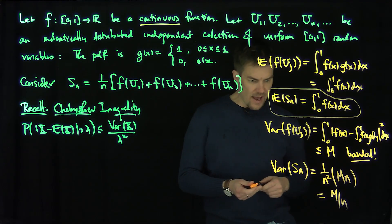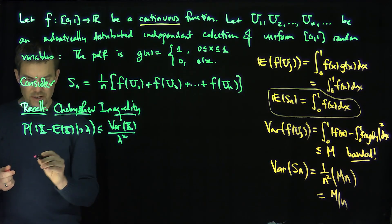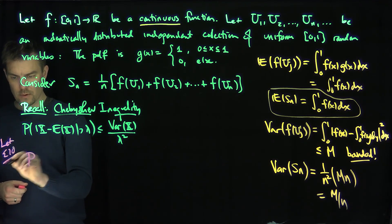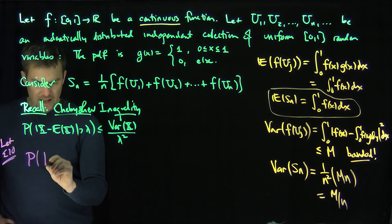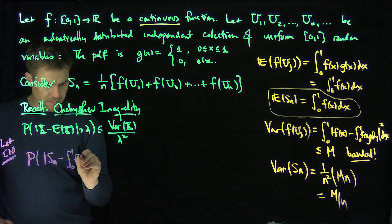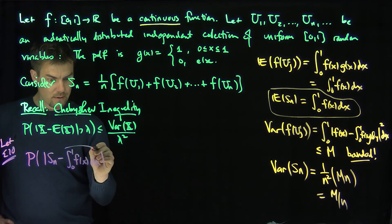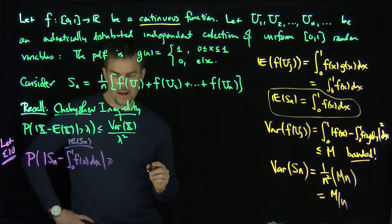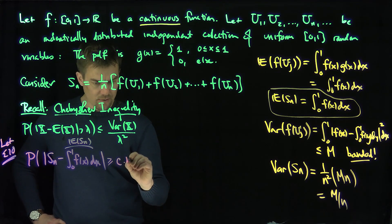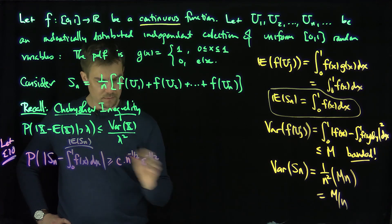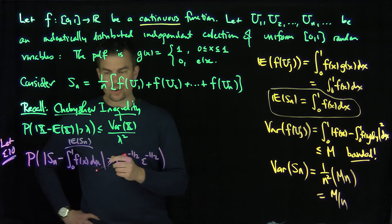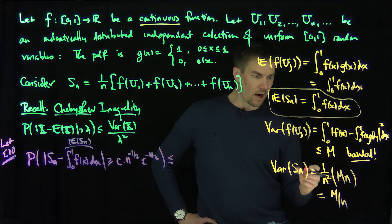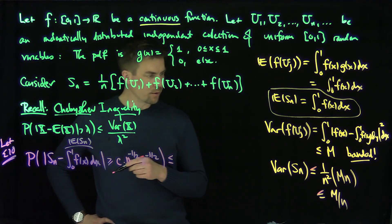Let's apply Chebyshev to Sn minus the integral from 0 to 1. Let epsilon be greater than 0 be a small parameter. The probability that Sn minus the integral from 0 to 1 of f(x) dx — that's its expected value — is bigger than or equal to a constant C times n to the negative one half times epsilon to the negative one half. By Chebyshev, this is less than or equal to the variance of Sn, which is no more than m times n to the negative 1, divided by C squared times n to the negative 1 times epsilon to the negative 1.